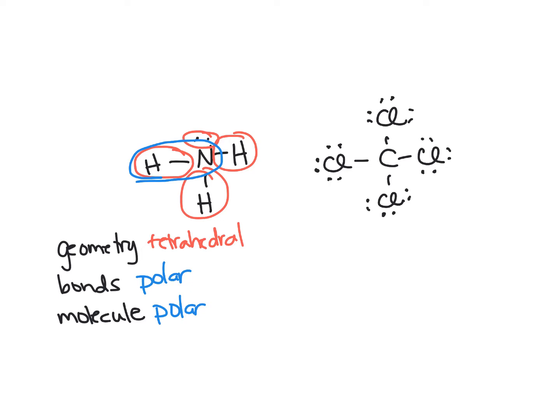So four groups gives us tetrahedral. Difference in electronegativity between two atoms gives us a polar bond. Overall, we have to look at how the bonds cancel each other out or don't, to let us know that we have a polar molecule.